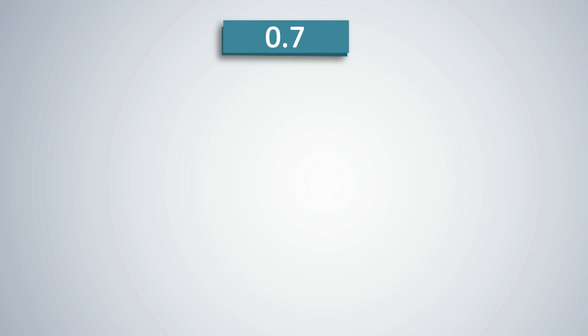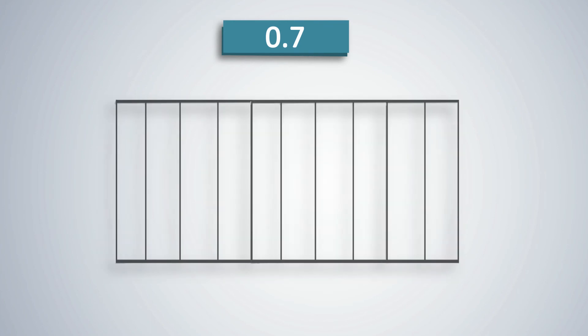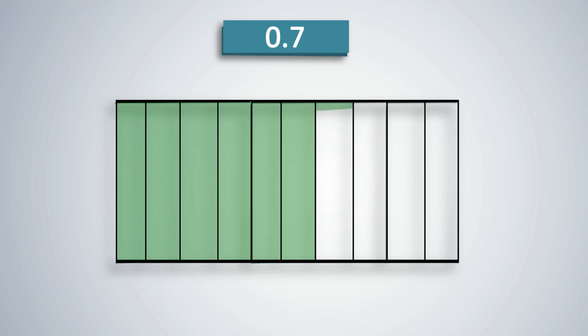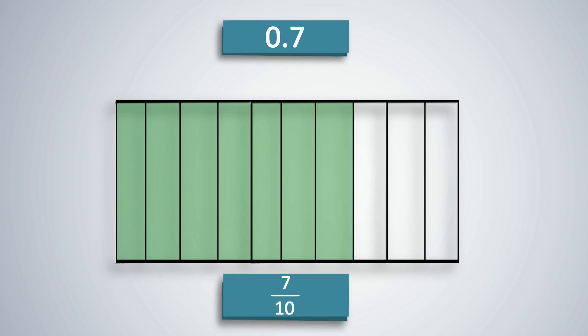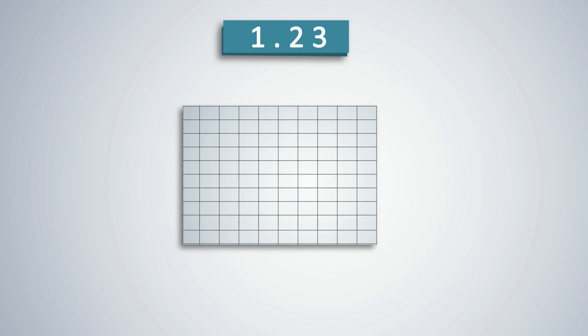How can a decimal number be expressed as a decimal fraction? For example, take 0.7. Here, 7 is in the tenths place since it is to the immediate right of the decimal point. This means 7 parts out of 10, and it is written as 7 upon 10.